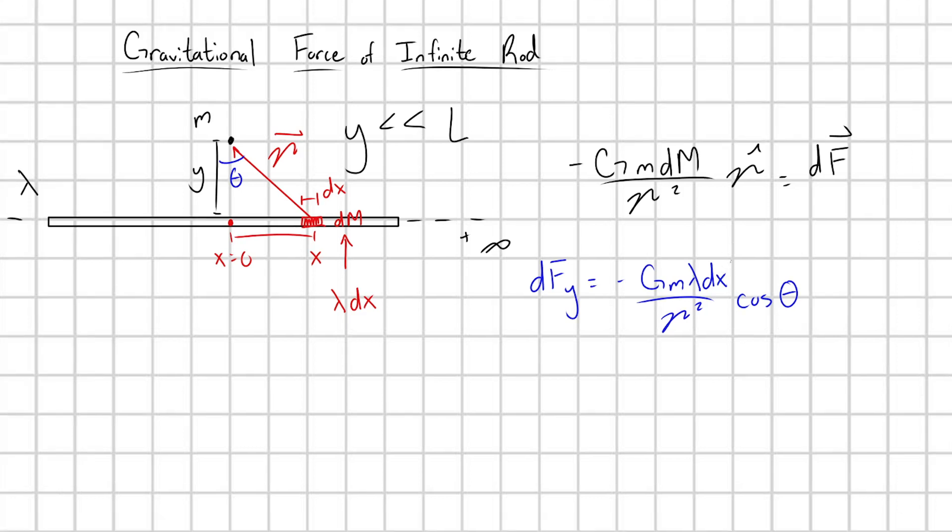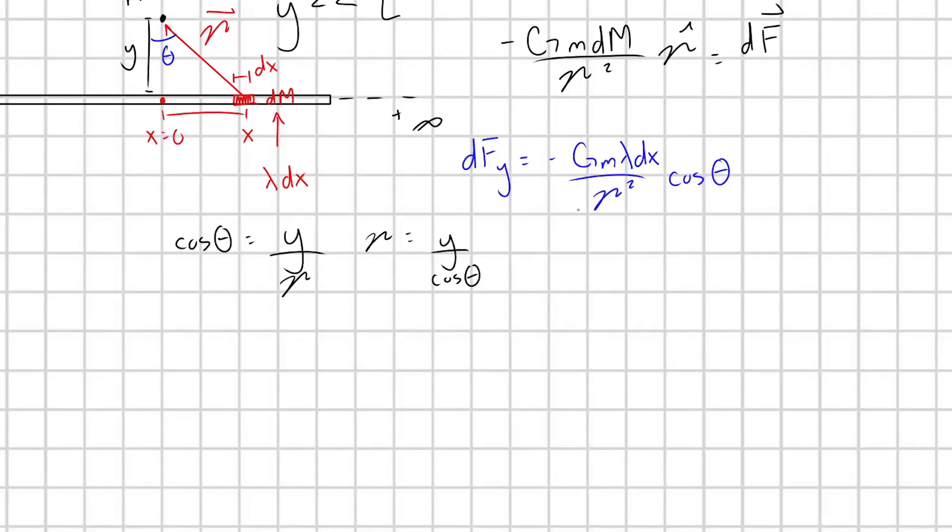All right, if we're good with that, I'll go ahead and rewrite dx out in a little bit. Let me start with script R here. So we need to write script R in terms of our angle theta. And look at this triangle real quick. We have that cosine theta equals our adjacent Y over our hypotenuse script R. So we have that R is going to be equal to Y over cosine theta. That's great. And so we have that dFy, if we plug that in, is going to be equal to minus Gm lambda cosine cubed theta over Y squared. I just plugged that in for script R.